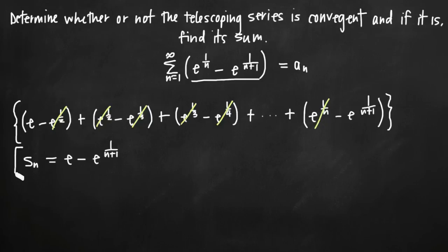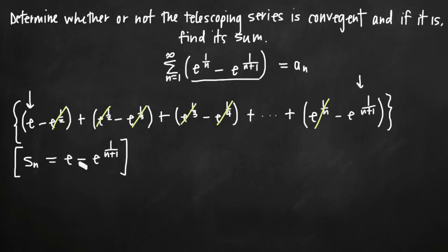As long as you can find this value by canceling all the terms in the center and being left with just the first and last term, you get your model for the series of nth partial sums — s sub n. As long as you find this, you know the telescoping series is convergent, so we can say it's convergent.